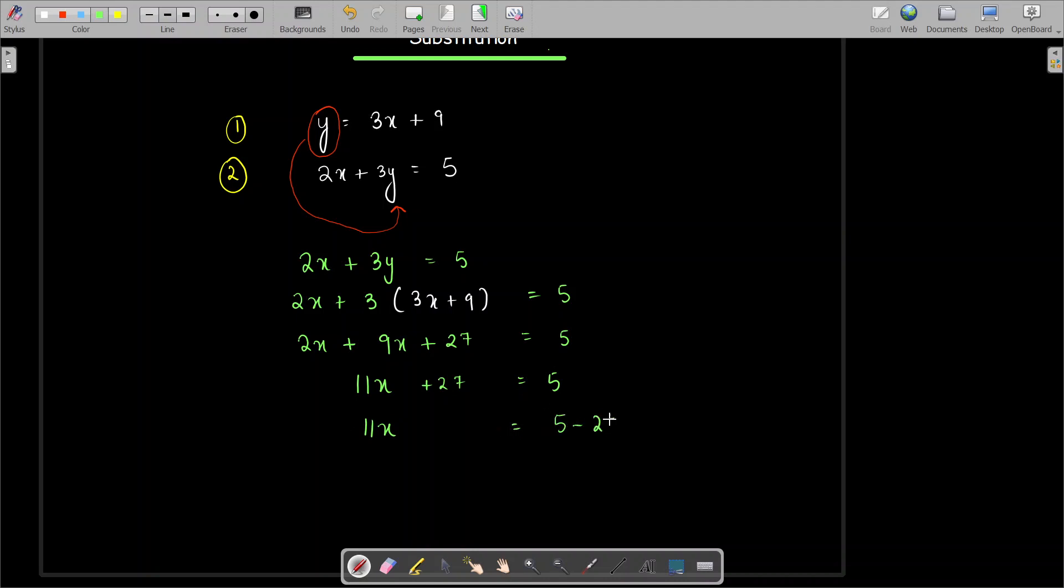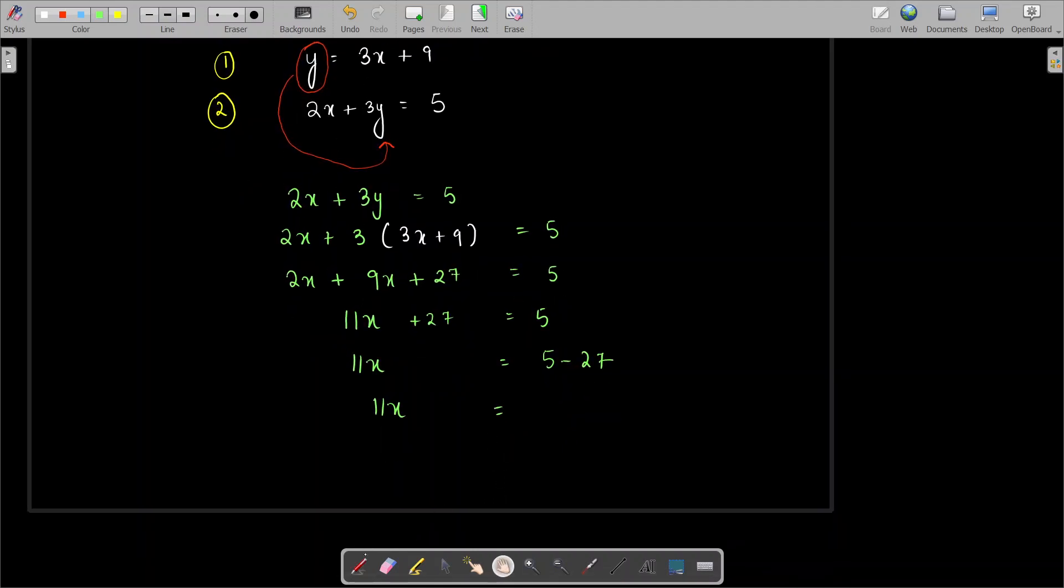Subtract 27 from both sides, so 11X equals 5 minus 27. 11X equals negative 22. Then divide the equation by 11, so we get X equals negative 2.